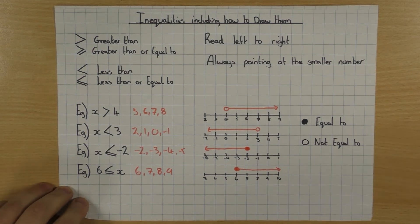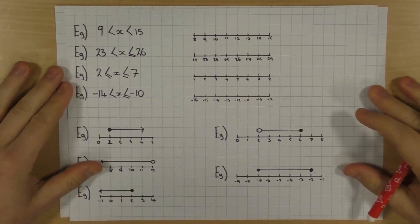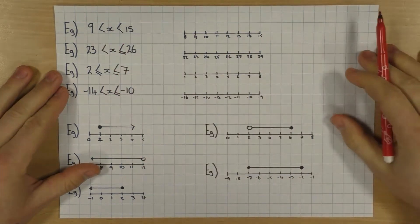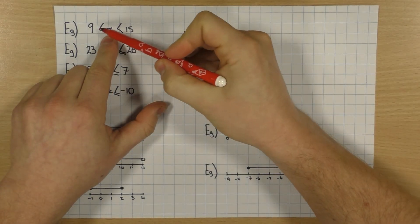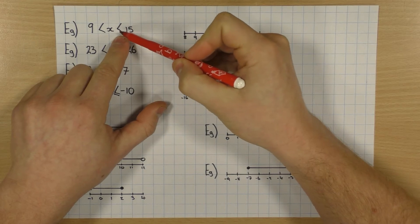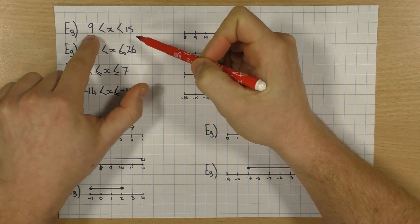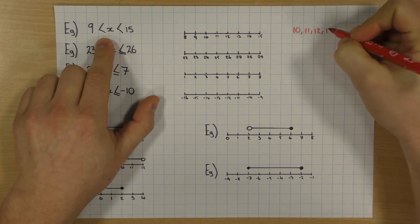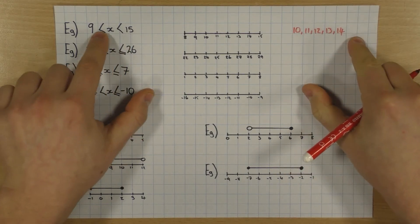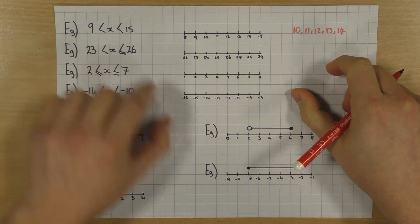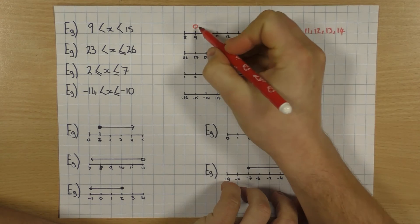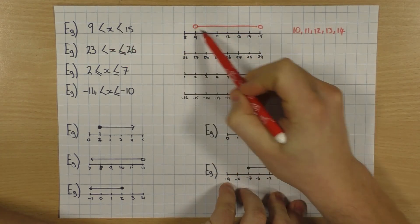That's some basics — let's step up a notch. You could have something that looks a bit like this, where we've got two inequalities. All they're saying is that we're pointing at 9, so x is bigger than 9, but then this one is pointing at x, so x is less than 15. So x is bigger than 9 but less than 15. I could have 10, 11, 12, 13, and 14. I can't have 9 or 15, because these haven't got the equal sign. How we draw that: put a circle over 9 and a circle over 15, join them up, and because they're not equal to, leave them as clear circles.